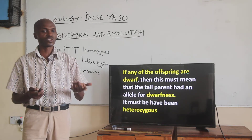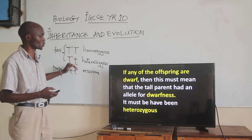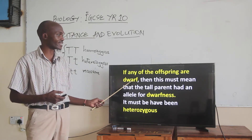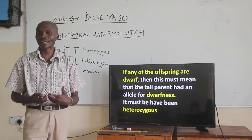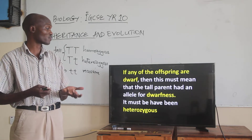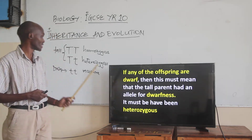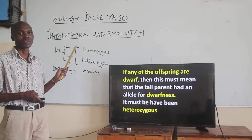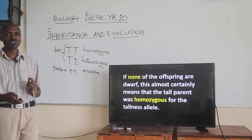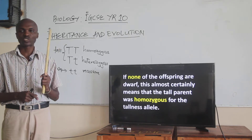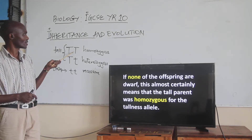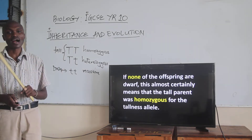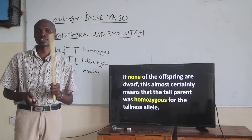If you are to cross these two, and then one of the young ones happens to be a dwarf or a short variety, then it means that the tall parents have an allele for dwarfiness. In that case, we are likely to have a heterozygous case. But if none of the offspring is actually a dwarf, then it is more certain that we have a homozygous case, in which the parents have the tall gene for tallness.